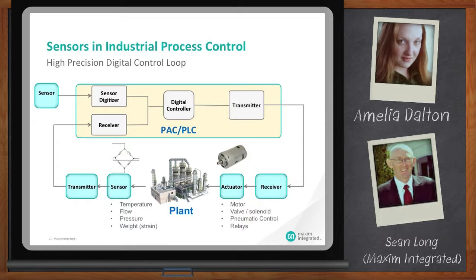Sure. And this diagram here just shows an example of a digital control loop, which is essentially an industrial control system, and a combination of either local or remote sensors, depending on the type of measurement you're doing.